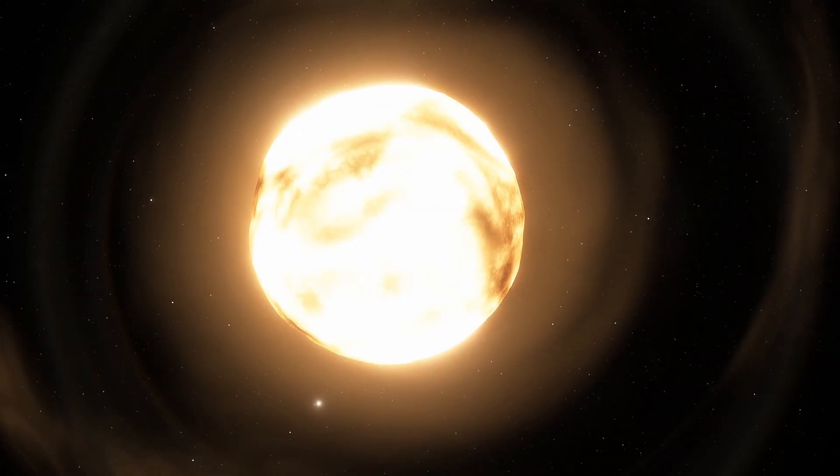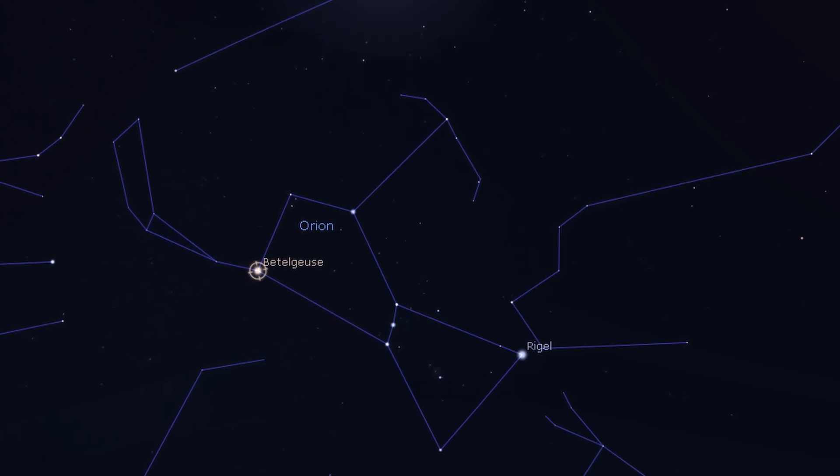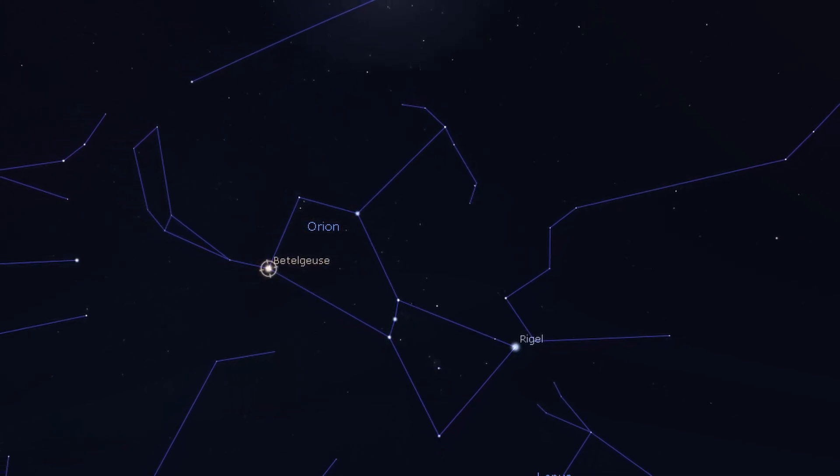Betelgeuse was the 11th brightest star in the night sky, and the second brightest in the constellation of Orion, only outshone by Rigel.